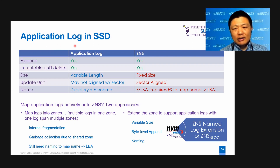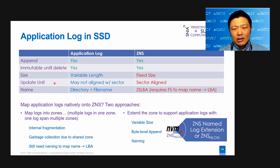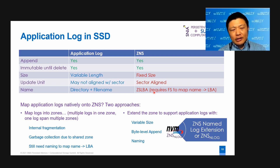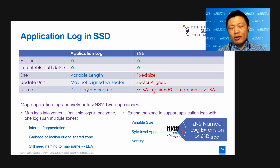It's all very good, but can we do more? Can we do better? Let's compare the application log and zones. Both are append-only, both are immutable until delete, but the application log has variable length while the zone has fixed length. Also, the application log update may not align with the sector, while the update in zone has to be sector-aligned. Lastly, the application log is determined by the directory and file name, while the zone uses its zone start LBA. This means we need a file system to map the name to an LBA. Can we map the application log natively onto the zones? The answer is yes — there are two possible approaches.